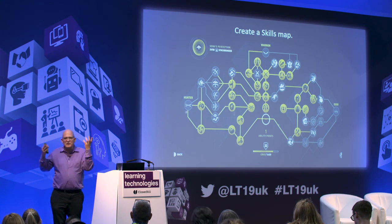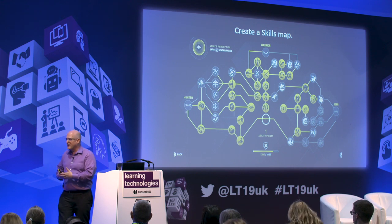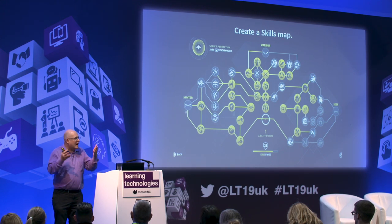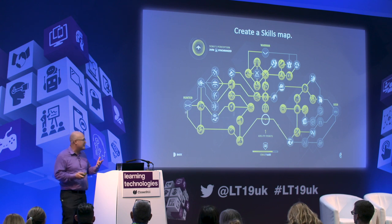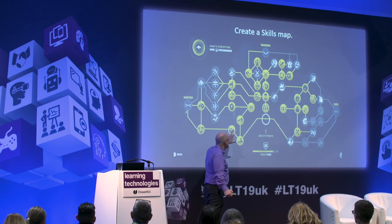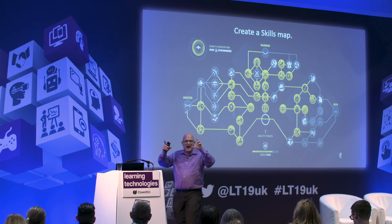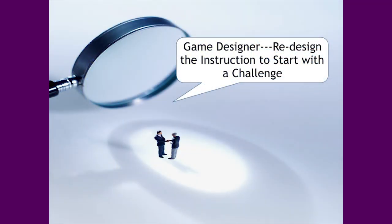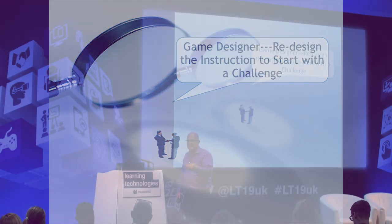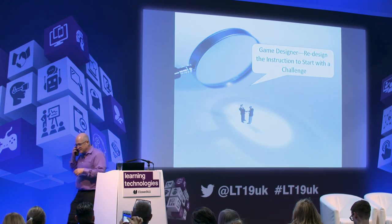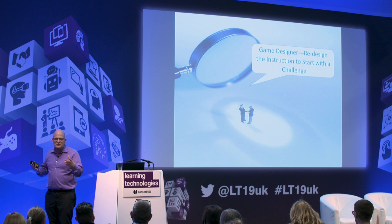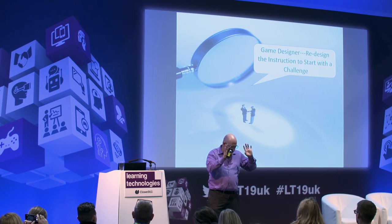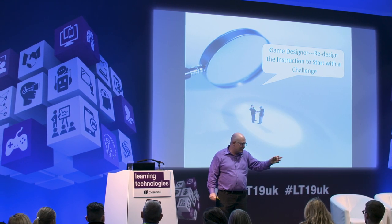When my son was young, I told him he could go to bed at 7:30 or 8 o'clock — his choice. I knew he'd pick 8, but I gave him that sense of choice and command. We want to give learners that sense of choice. Create a skills map so people can figure out where they want to go, what they want to learn, and what information they want to apply. Think about redesigning instruction to start with the challenge.